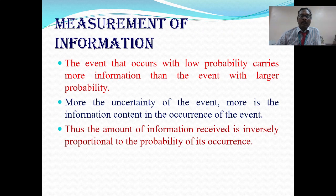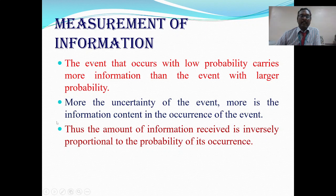The event that occurs with low probability carries more information. An uncertain event carries more information — people will talk more about it — but it happens very rarely, meaning it has low probability. The more the uncertainty of an event, the more information content upon its occurrence. So we can relate information and probability: the amount of information received is inversely proportional to the probability of occurrence.